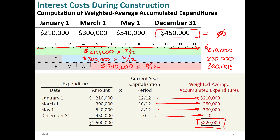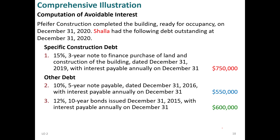Calculating weighted averages has to become second nature, especially for finance majors. Now, what was the purpose of calculating a YE of $820,000? We're trying to figure out how much interest on our debt to capitalize. There was $750,000 borrowed specifically to finance the project at 15% interest. Other outstanding debt included $550,000 at 10% and $600,000 at 12%.